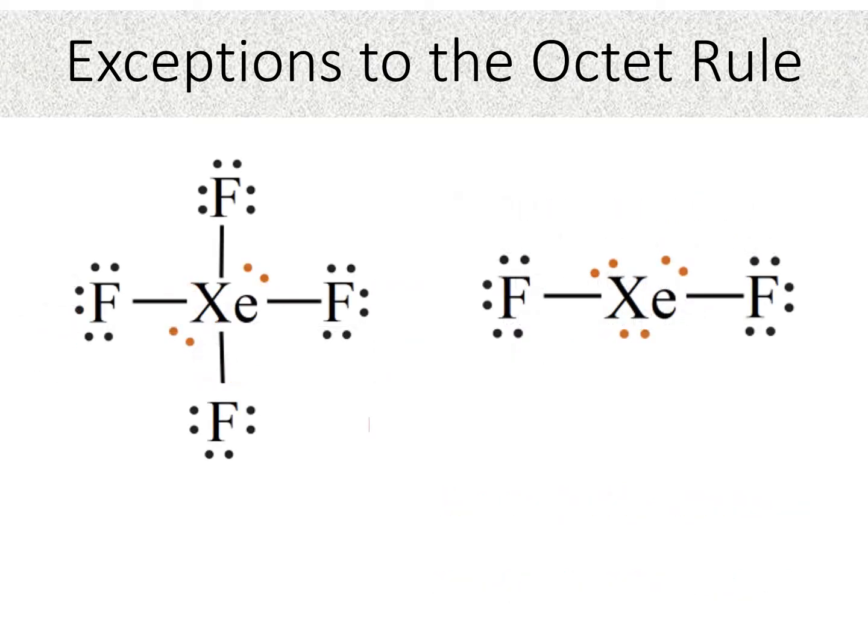So we've seen two structures that have more than an octet. But this is interesting. One time, xenon has 12 electrons. Another time, xenon has 10. Well, how are we going to know how many electrons are around the central atom if it's more than eight? Well, if you follow the steps carefully, if you'll see if we followed all our steps, we would end up with the correct number of valence electrons that need to go on the central atom. So one time we had four that we needed to put on the central atom. Another time we had six. So if you follow all the steps carefully, you'll know.